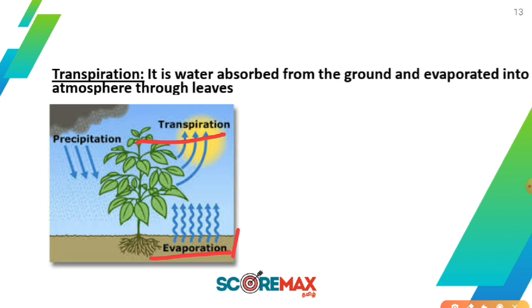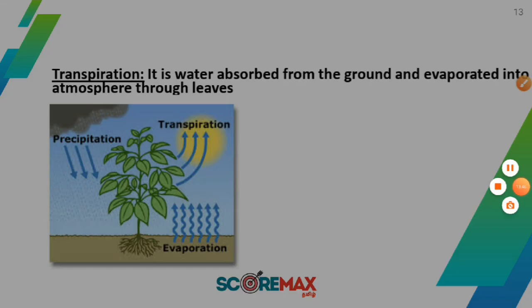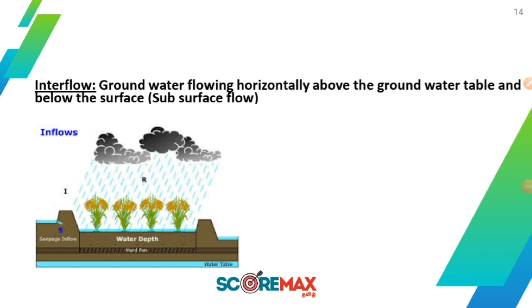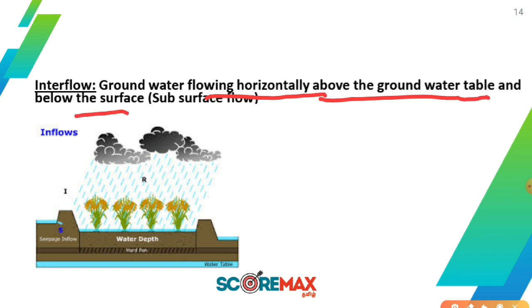Next, interflow — ground water flowing horizontally above the ground water table and below the subsurface. If we move the ground water table above the subsurface and below the subsurface, we have a water movement horizontally. The name of that movement is interflow — that means there are many movements including vertical, but this is the horizontal movement called interflow.